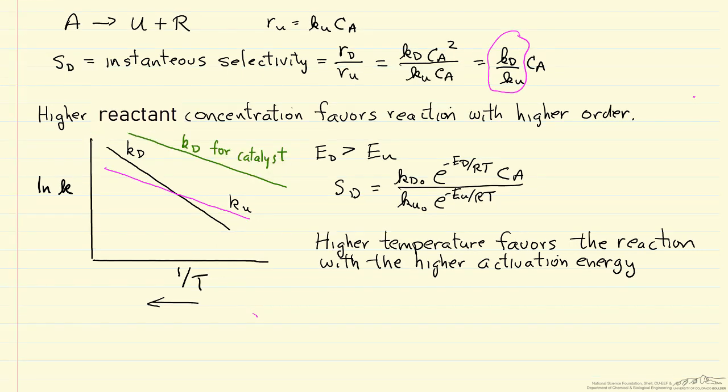I've drawn a different line, and remember this is a log plot, so the rate is much higher with the catalyst. The slope is different. Typically, catalyst decreases the activation energy. But now you can see, if we can find the right catalyst, we can dramatically increase this selectivity.